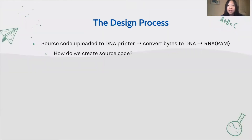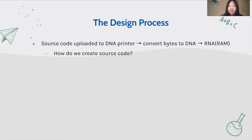Now we know the background of computational immunology, but how can we apply it to the vaccine design process? For mRNA vaccines, the computer will generate the source code, or the gene sequence, to produce the vaccine. The sequence is then uploaded to a DNA printer, which will convert computer bytes to actual DNA. Then, after a lot of chemical and biological processing, the DNA produced turns to RNA, and that's the final vaccine product.